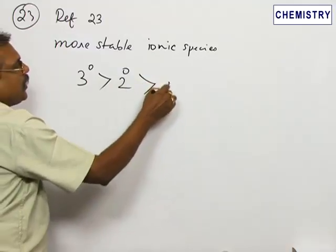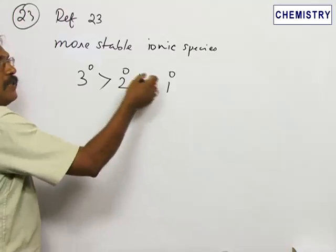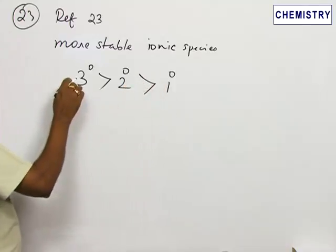For carbanions, there is a reverse order for stability. If you go by the concept, structures a and d will satisfy our condition.